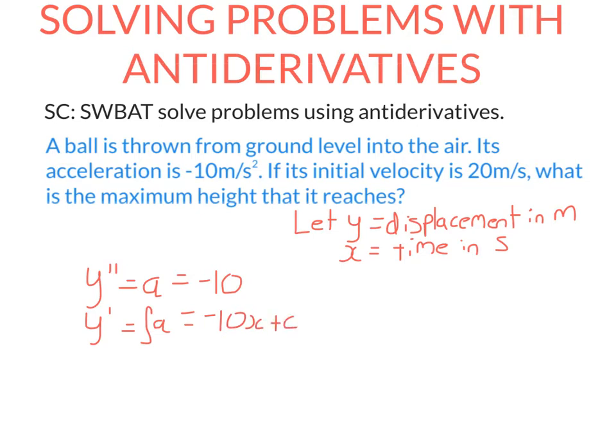Now we're told that the initial velocity is 20 metres per second. So that means when x equals 0, the velocity is equal to 20. That means that c here is equal to 20.